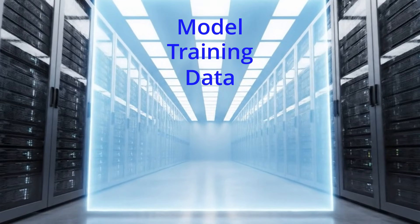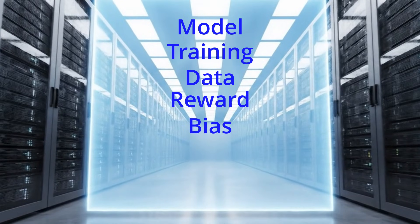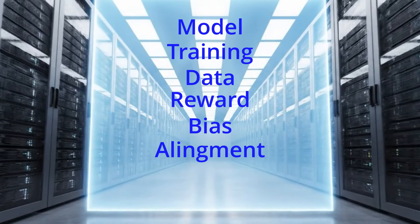Data: information fed into the model, which could be a mixture of text, images, video, audio, sensor readings, and other types of information. Reward: a cue indicating to the AI that it is performing well — for example, scoring a goal. Bias: systematic errors that make the AI favour or discriminate against certain groups. Alignment: making sure the AI's goals match human values.